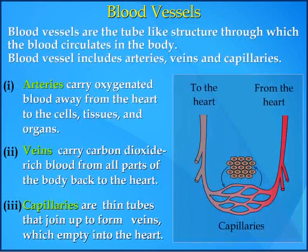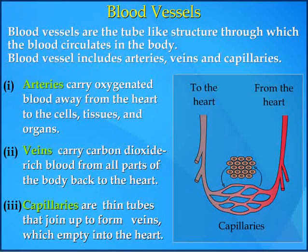4. Blood vessels. Blood vessels are the tube-like structures through which blood circulates in the body. Blood vessels include arteries, veins, and capillaries.